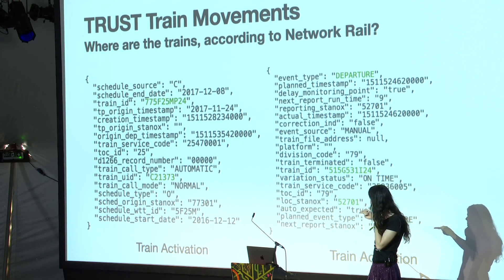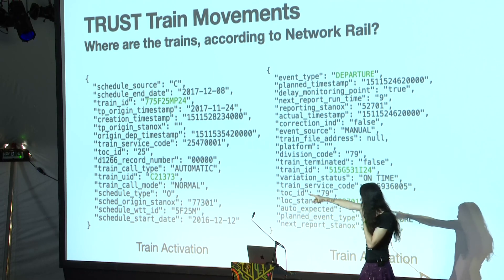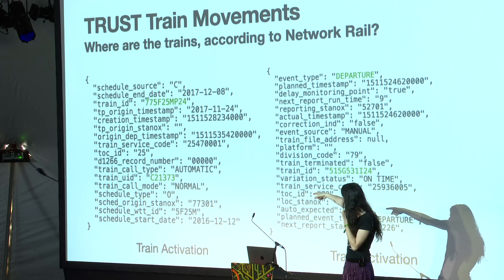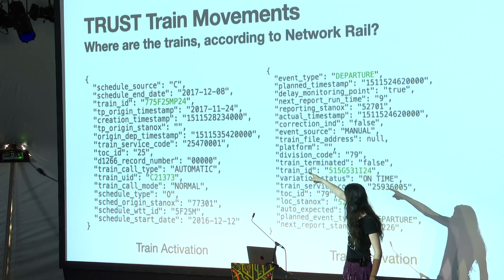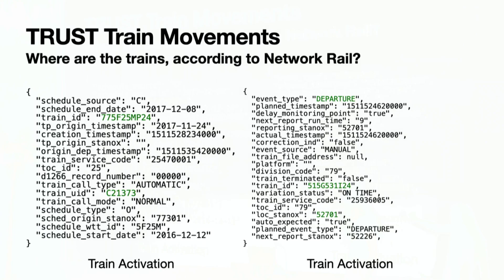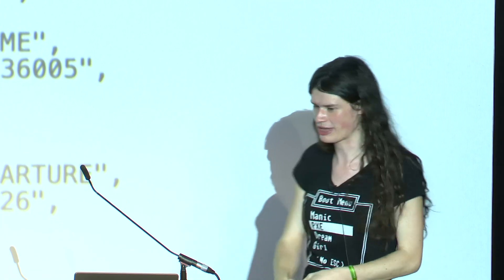The open data gives you a stream of JSON messages. On the left is activating a train — when a train's about to leave, you get the train's UID from before and its TRUST train ID, because we cannot have one set of IDs, that'd be too easy. On the right, that's a train actually moving: it gives you the train ID and tells you it's left a location with a specific ID. Again, a new kind of station ID. There is a database called Corpus that gives you all the different IDs for locations, so it's annoying but not actually that bad.